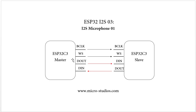For our I2S microphone, the first pin is the clock. This clock will connect to our ESP32's BCK (bit clock) pin. The ESP32 will generate the clock through this pin to the microphone.